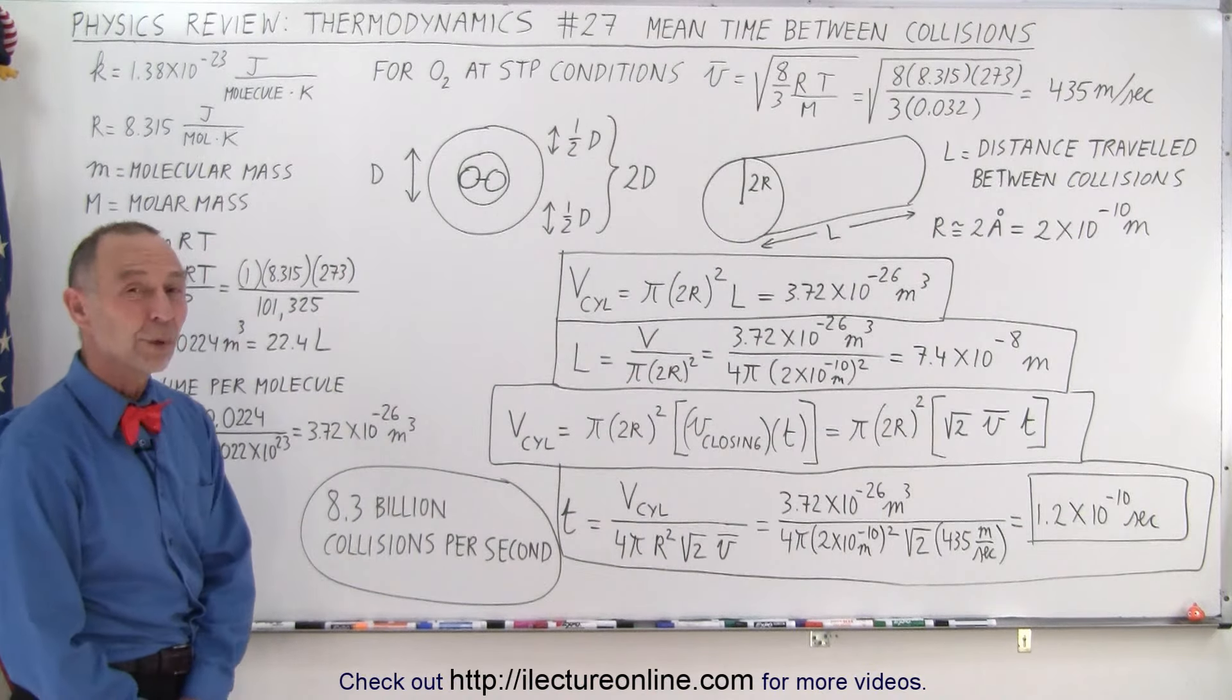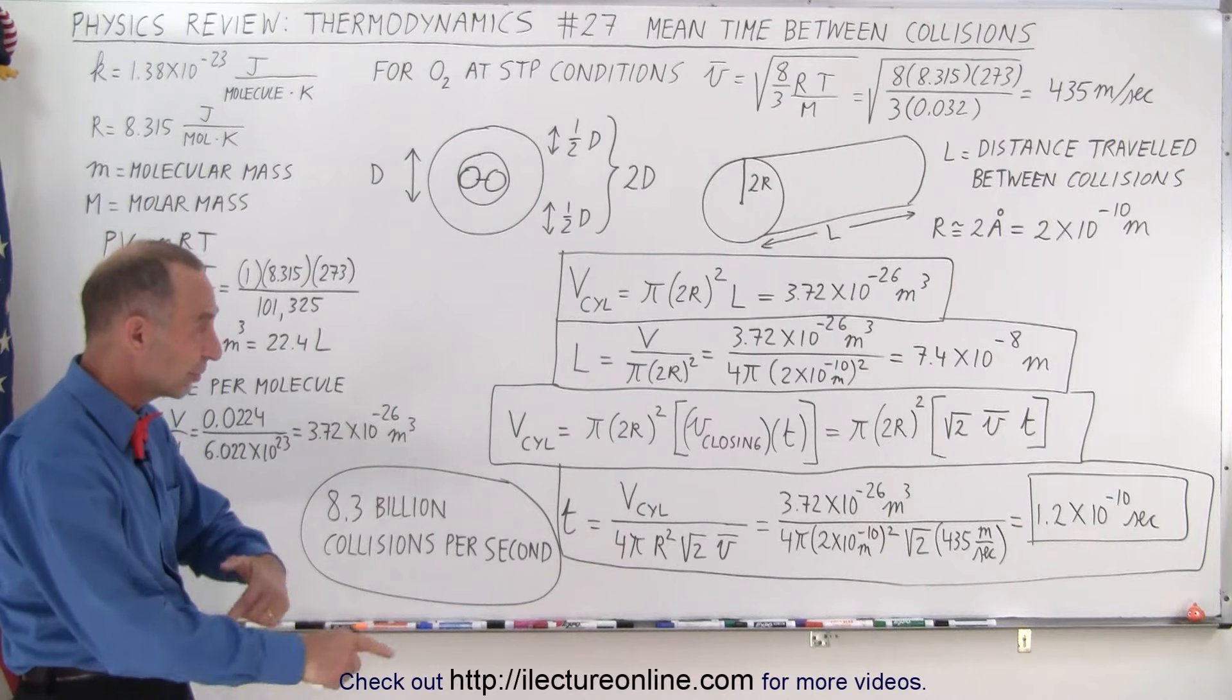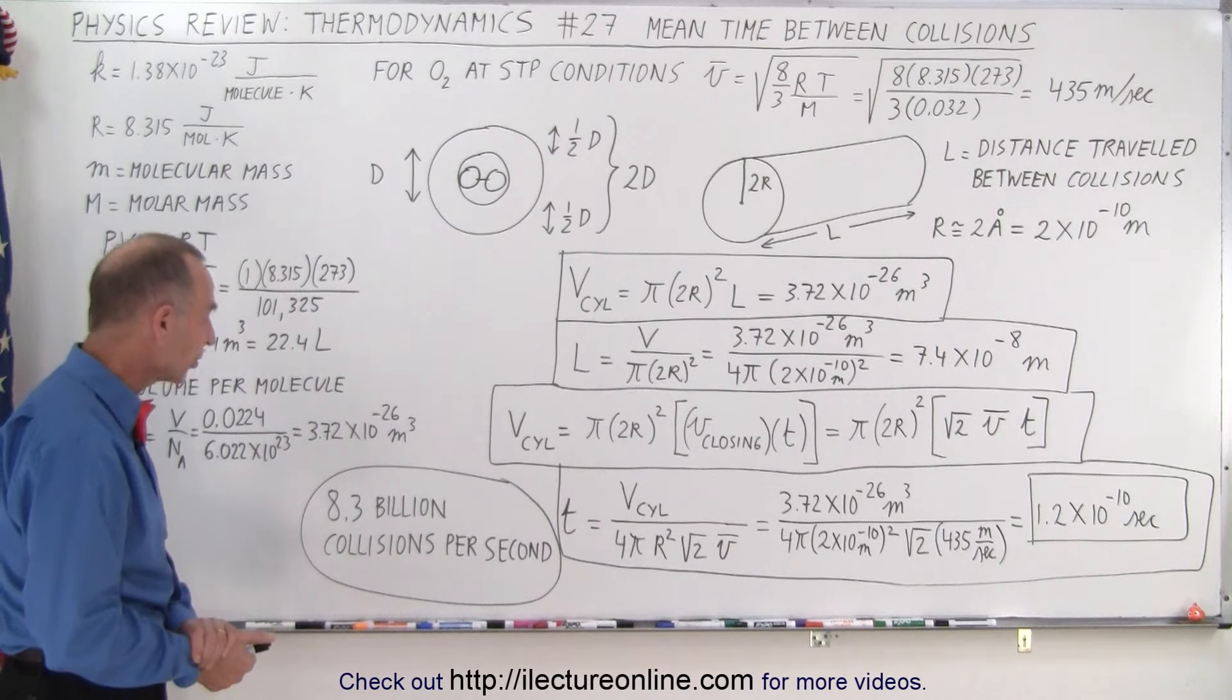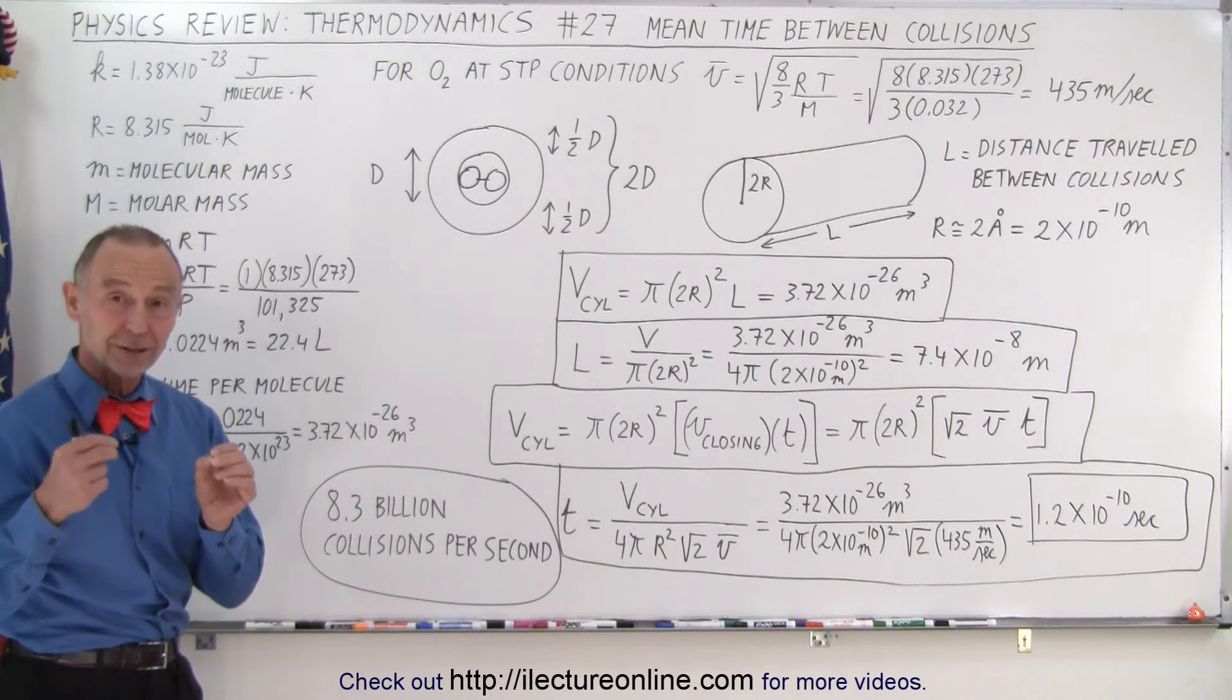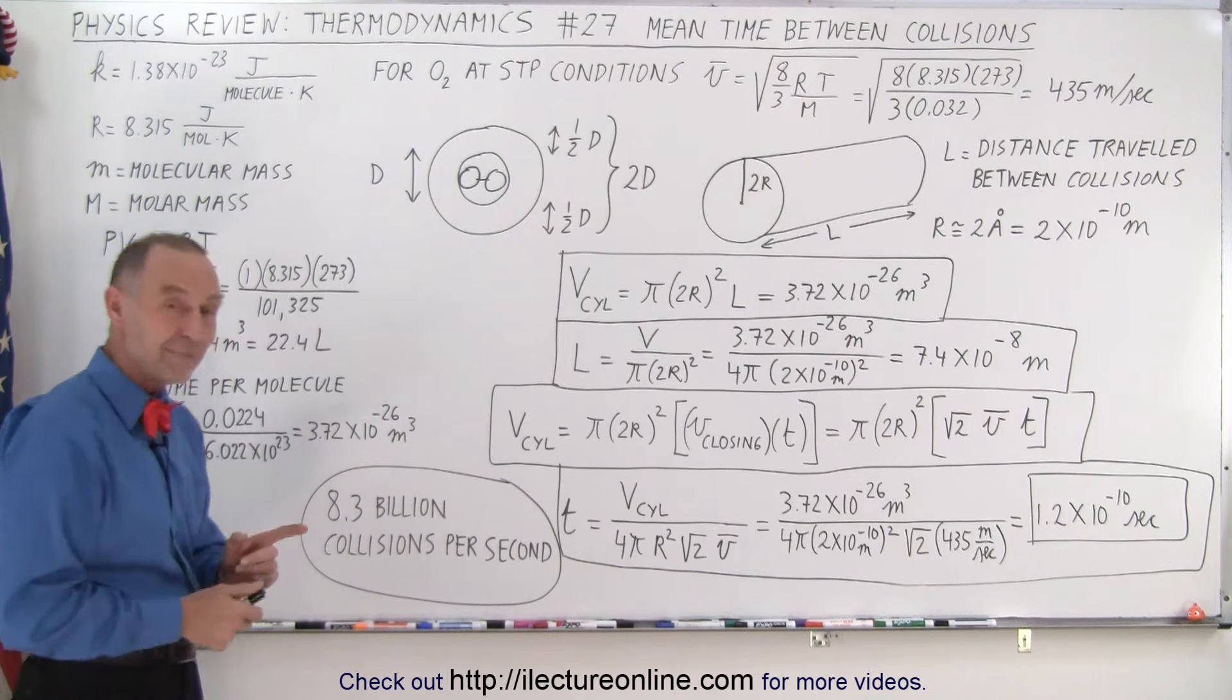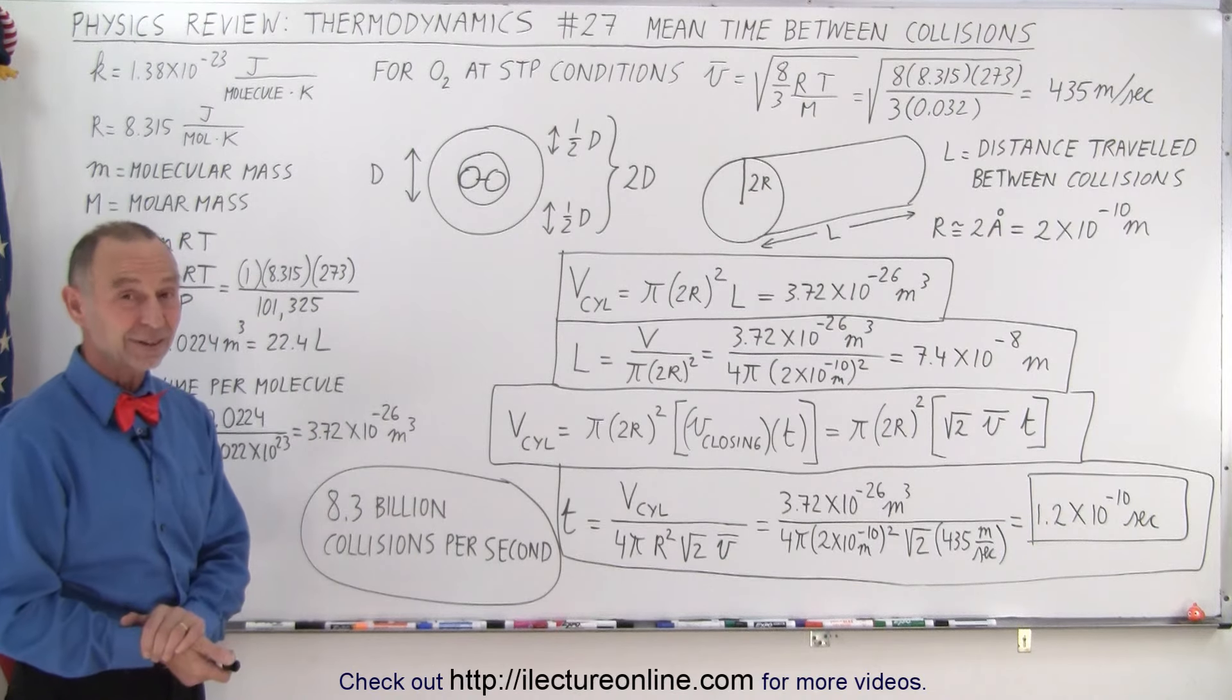Of course, if you take the inverse of that, it shows that there's an average of 8.3 billion collisions per second of a single molecule. A molecule will collide with another molecule in the air 8.3 billion times every single second.